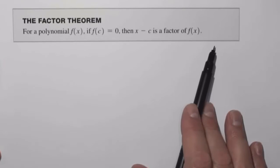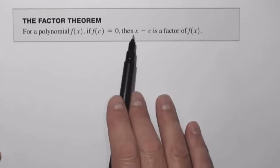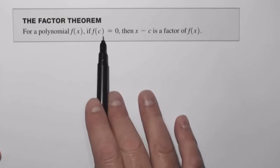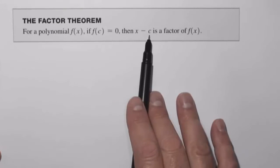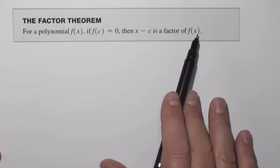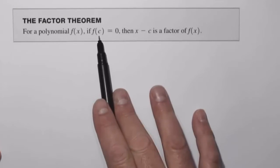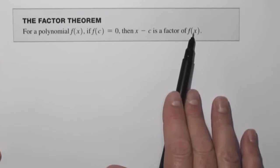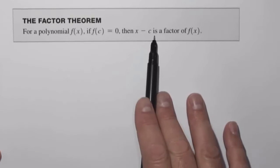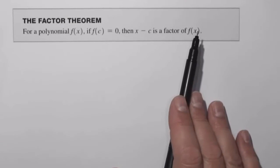Now I hope this theorem makes sense. What we're really saying is that if the number c is a zero of a function, then x minus c is going to be a factor of the function. So in other words, if c is a zero of the function, then we're going to be able to say the function equals x minus c times some other polynomial.